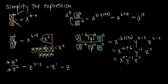X to the zero we know is one, and anything times one is itself, so the x term cancels. Now we have y to the negative one times z cubed. Just as we moved a to the negative four into the numerator earlier, here we have y to the negative one in the numerator — we can move it to the denominator where it becomes y to the positive one. That leaves z cubed in the numerator. Writing y to the first power is unnecessary since the one is implied, so our final answer is z cubed over y.